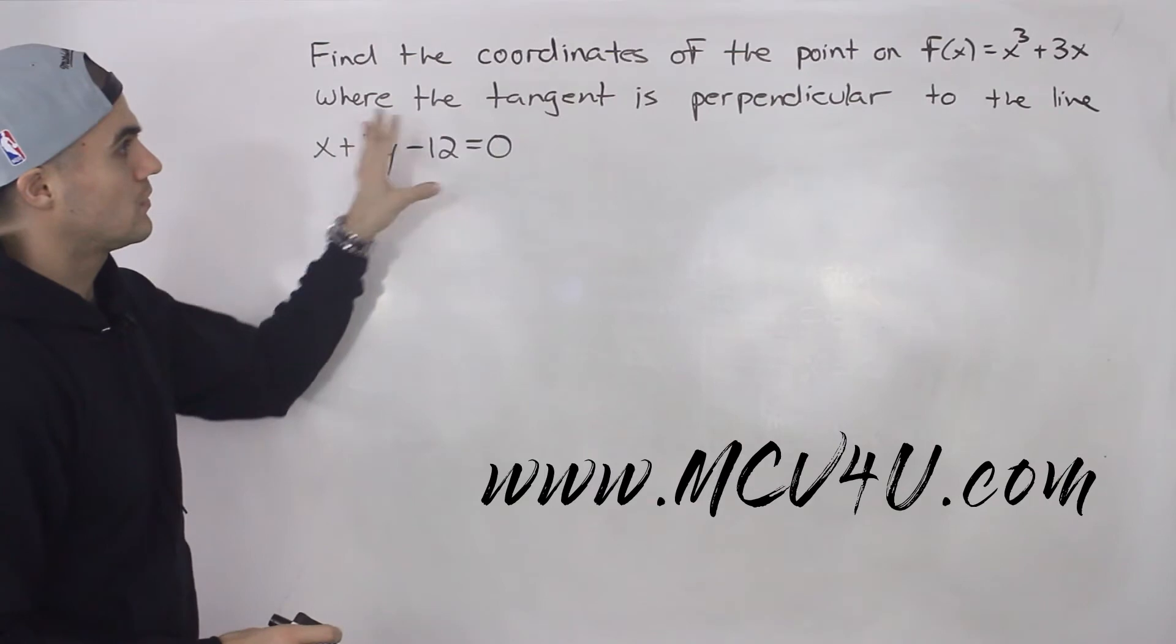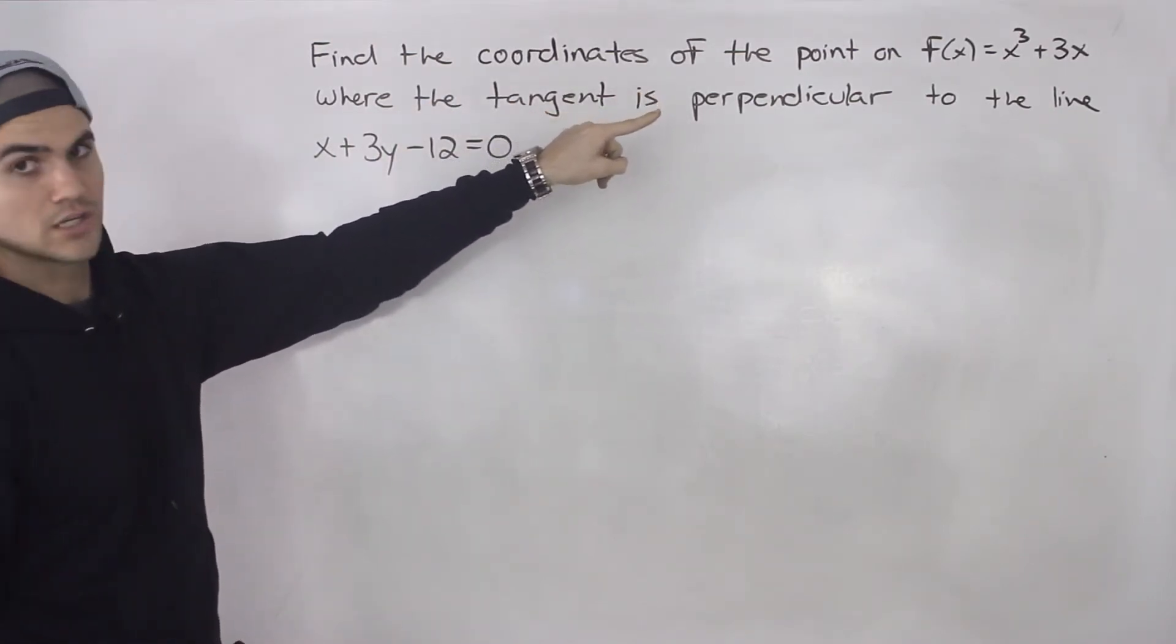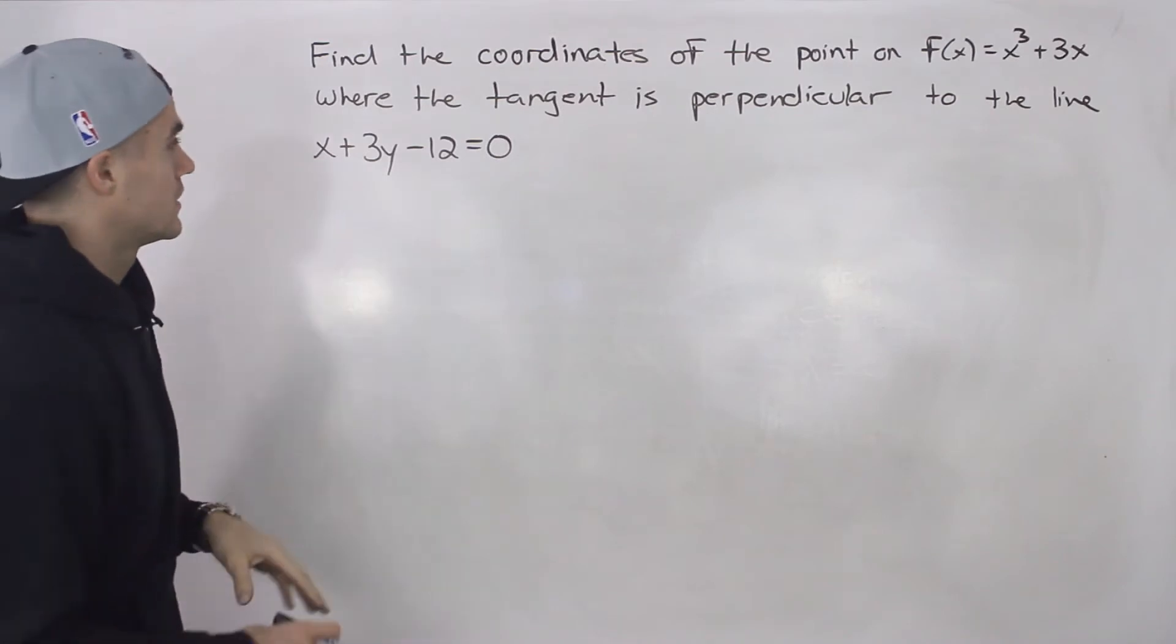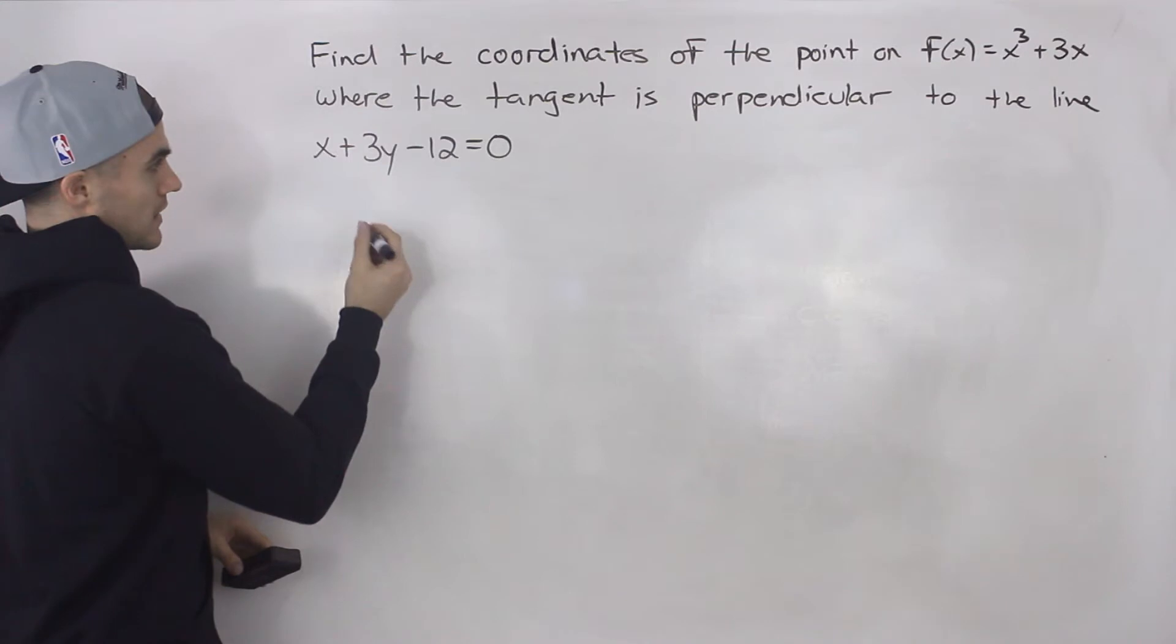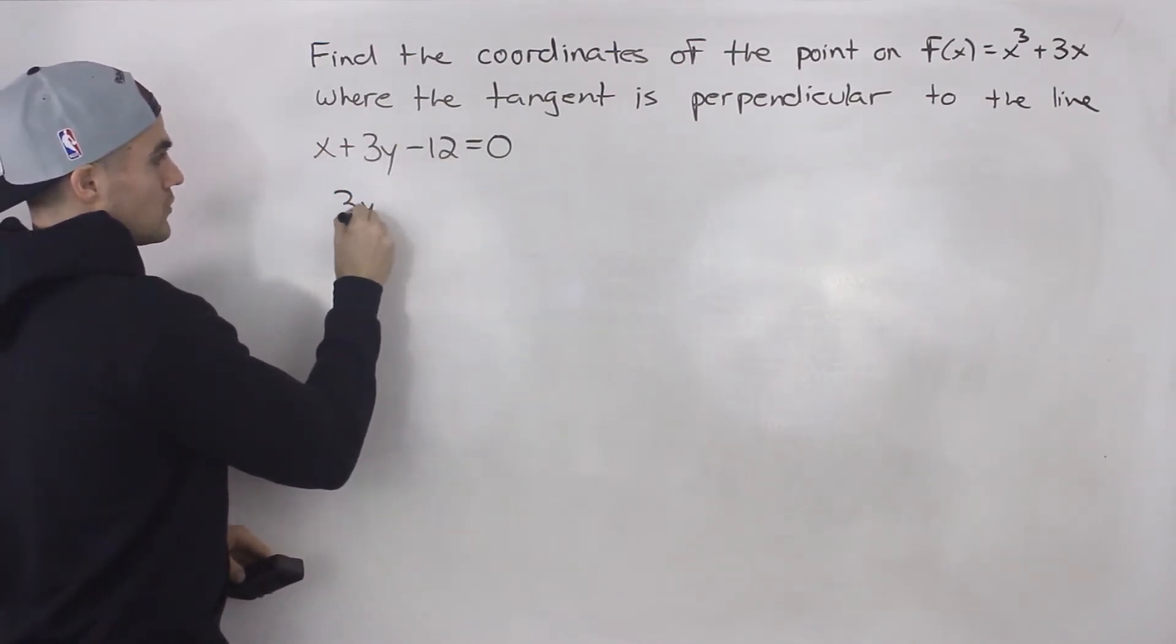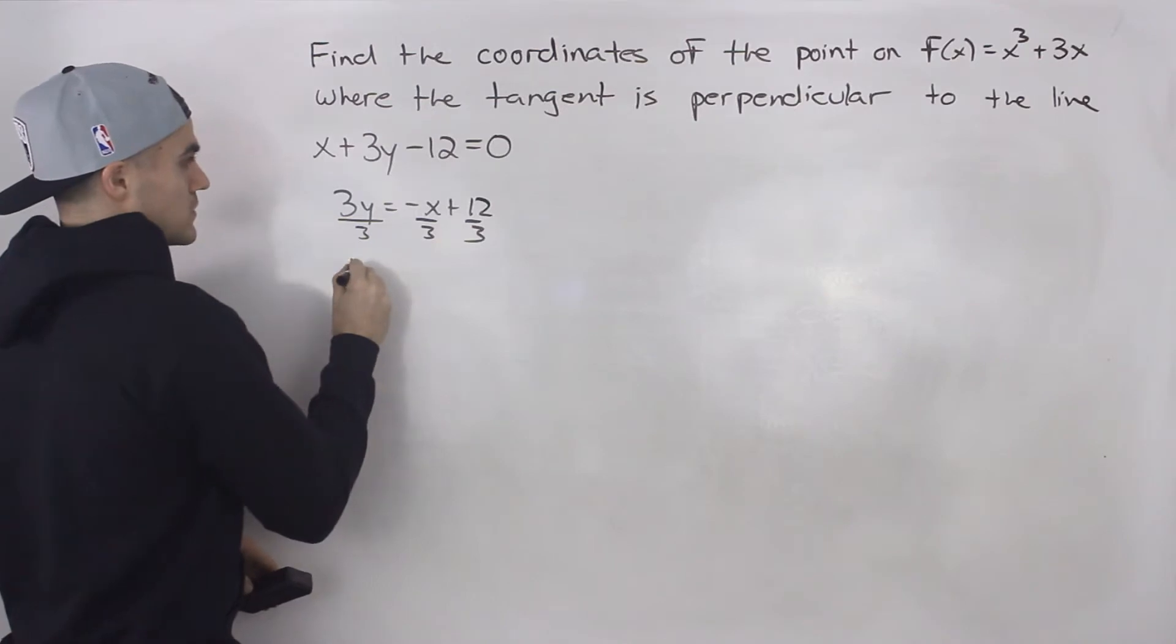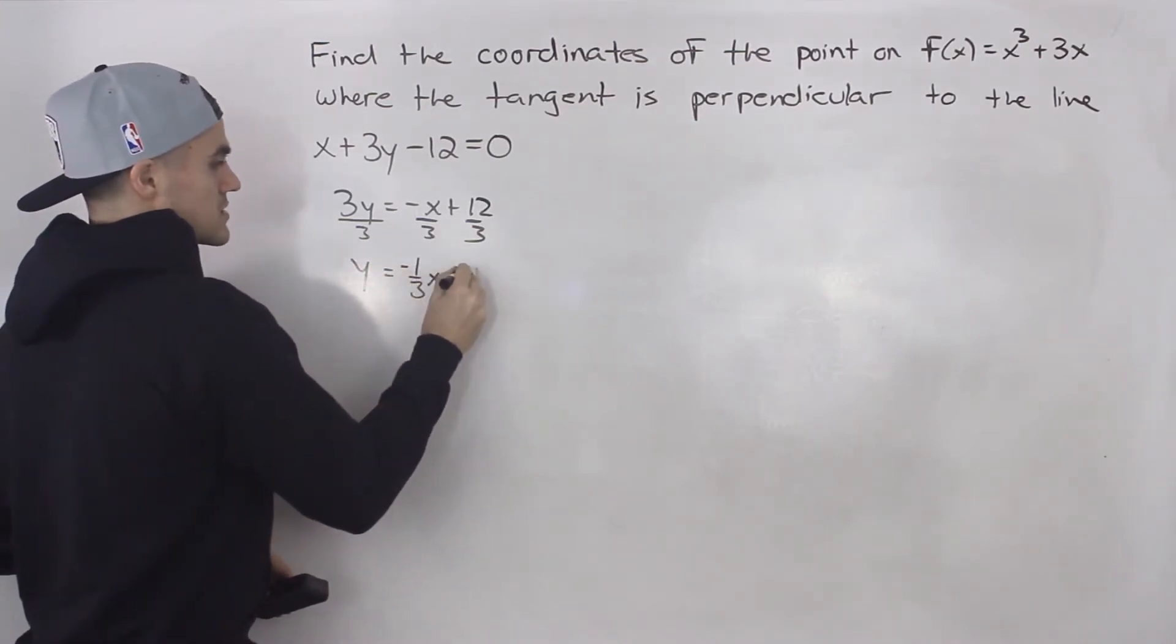So we have to find the coordinates of the point on that function where the tangent on that function is going to be perpendicular to this line. So this line here, let's change into y = mx + b format. If we bring the x over, bring the negative 12 over, we'll have 3y = -x + 12. And then we can divide everything by 3 to isolate for that y. So we've got y = -1/3 x + 4.